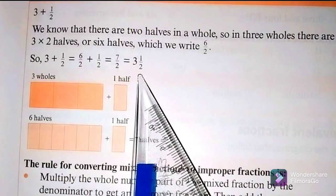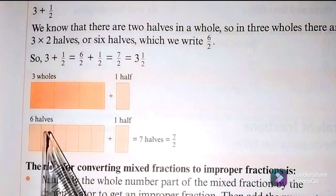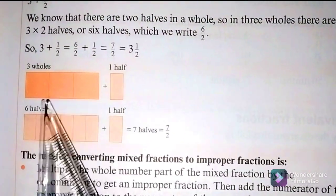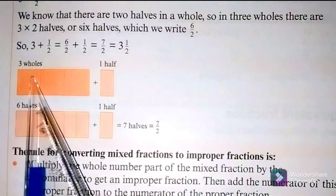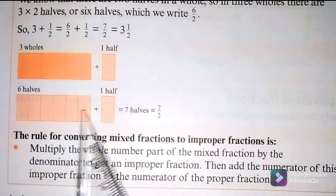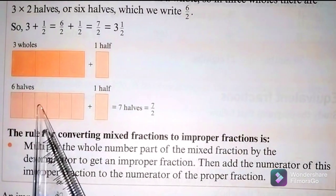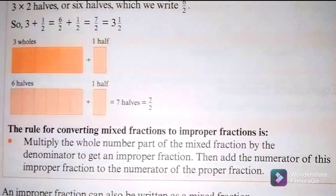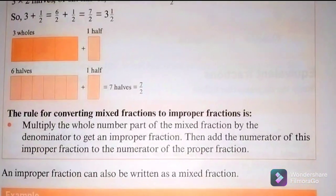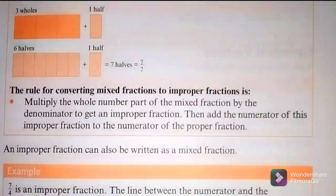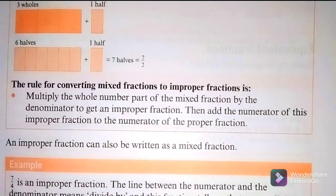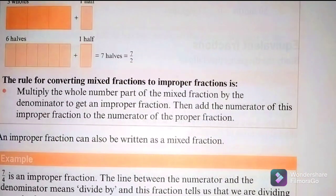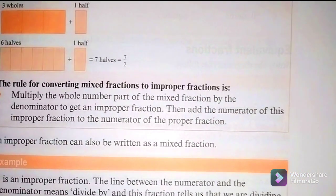Visualizing three boxes each divided into halves gives us six halves, and one more half — so we count one, two, three, four, five, six, seven: seven halves or 7 over 2. The rule for converting mixed fractions to improper fractions is: multiply the whole number part by the denominator, then add the numerator of the proper fraction to get the new numerator of the improper fraction.